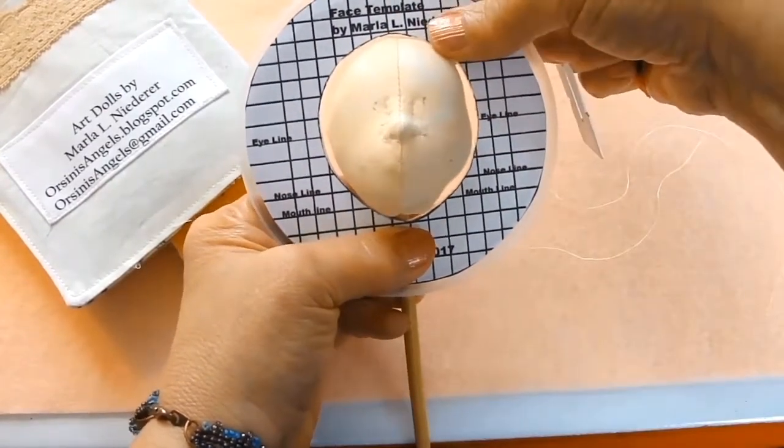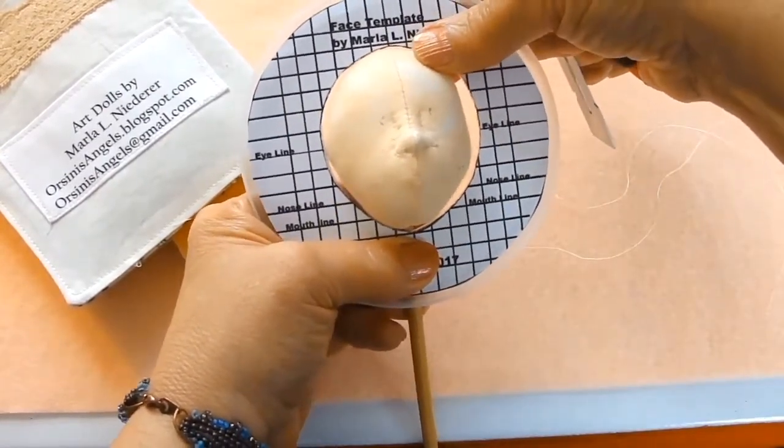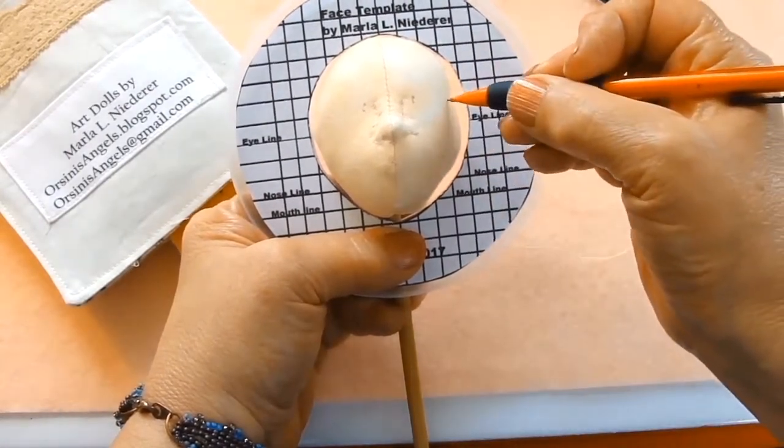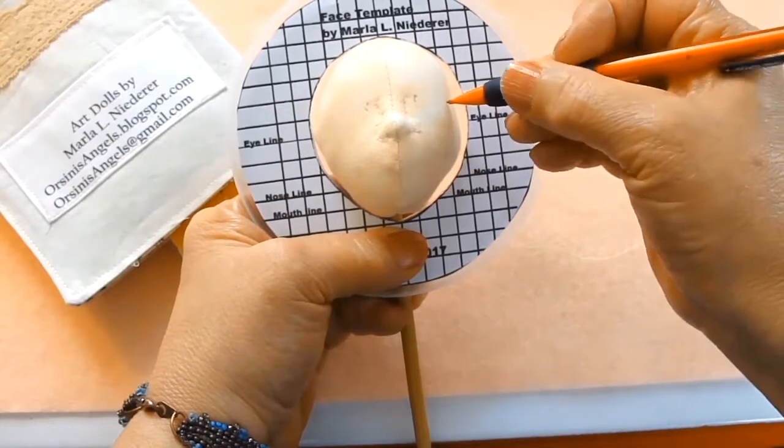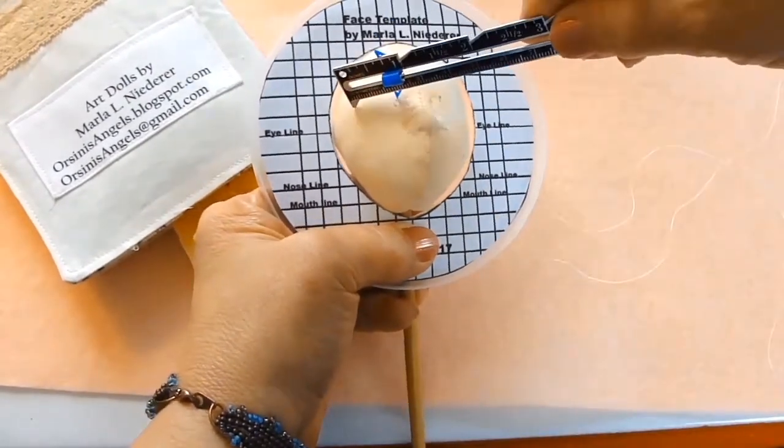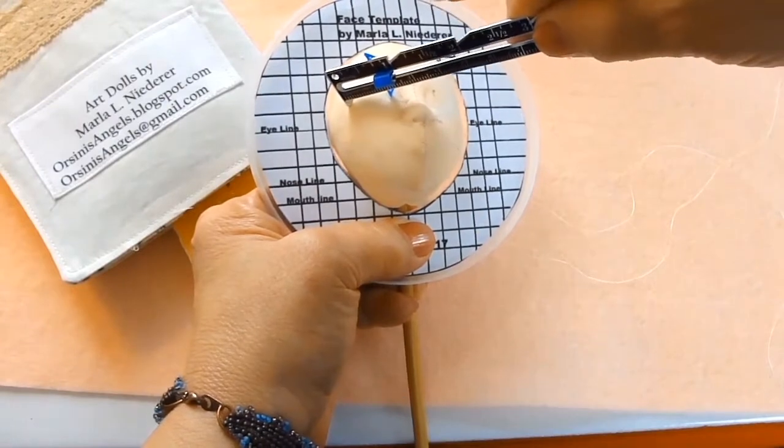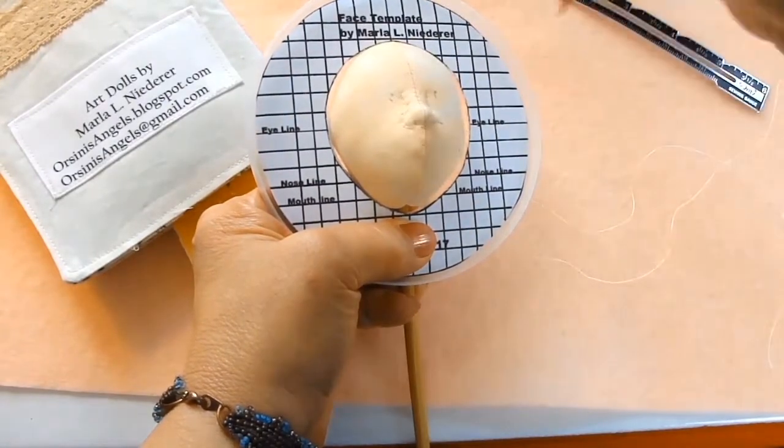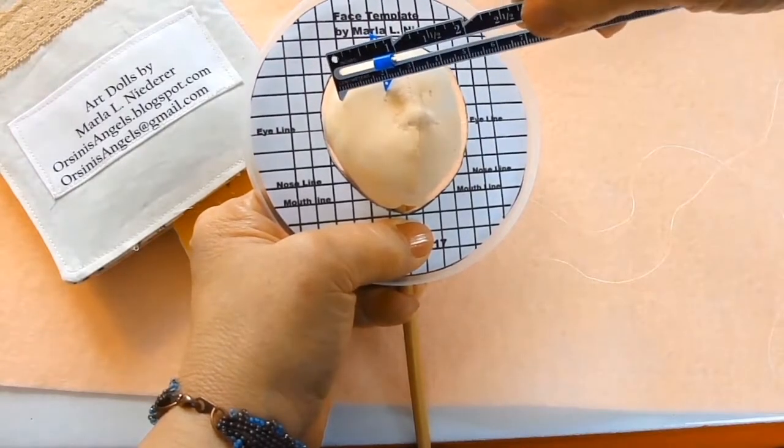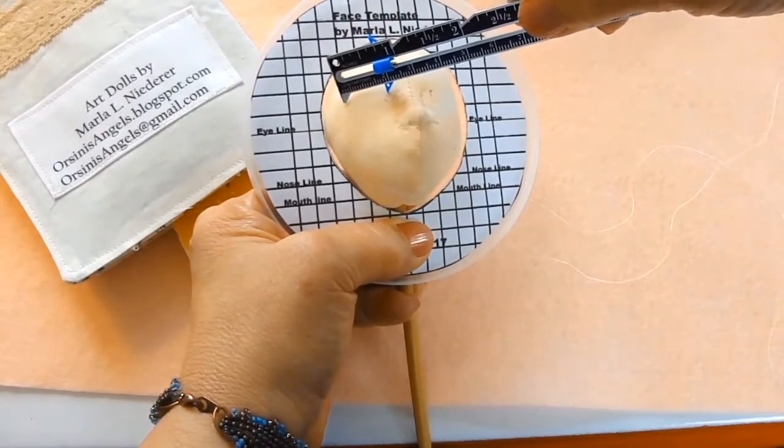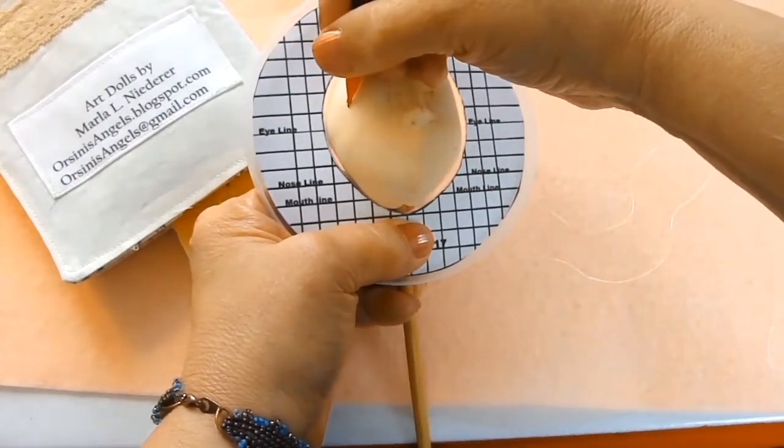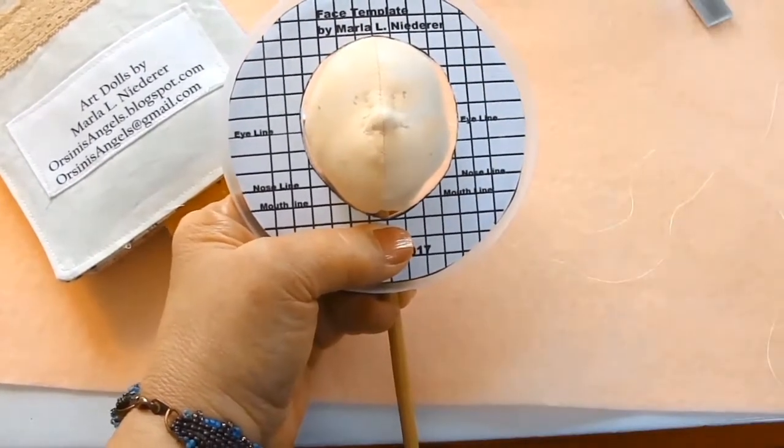I prefer the mechanical pencil better than the markers that you can buy for sewing where you just wet it and erase the marks. I find that accuracy is more important to me. On the template, there are lines that are labeled for the eye, nose, and mouth line, and that's just a suggestion.